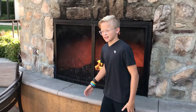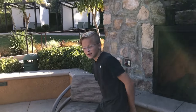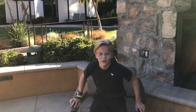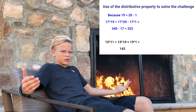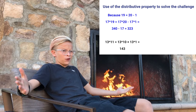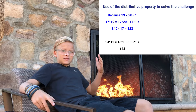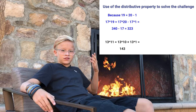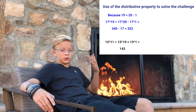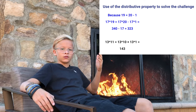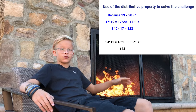Now I'm multiplying 13 times 11 times 7. First, 11 times 13. Since 11 is just 10 plus 1, we can all multiply by 10. 10 times 13 is 130, plus 13 times 1 which is 13, equals 143.